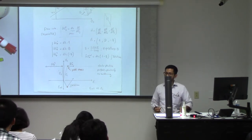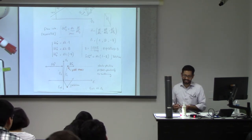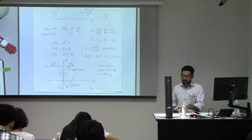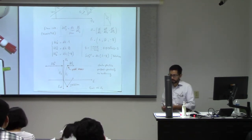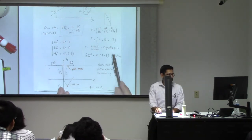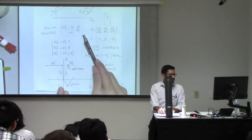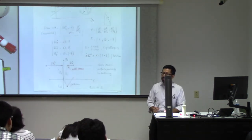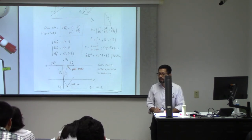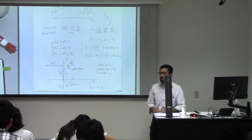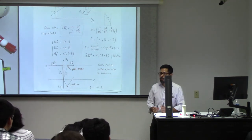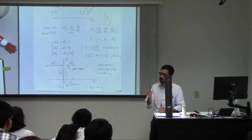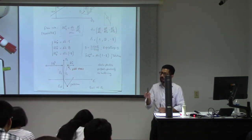Now we know the failure surface and we can compute plastic strains. But is that the end of the story? Probably not. It turns out that sometimes utilizing this flow rule, which is directly linked to the yield surface, doesn't give you very accurate predictions of plastic strain.